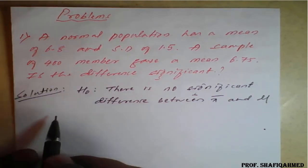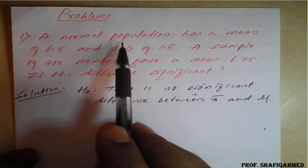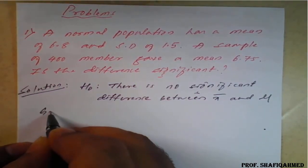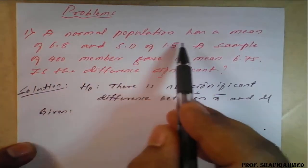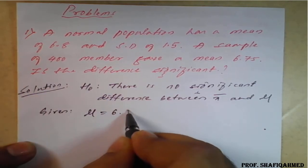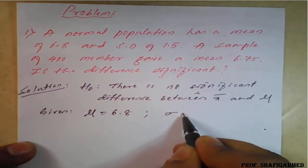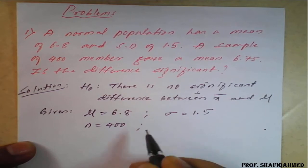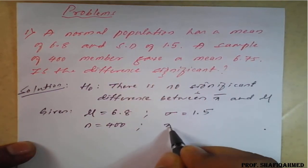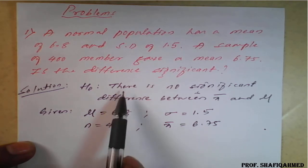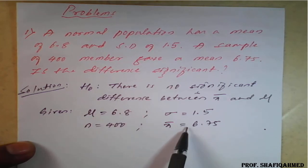We will collect the data. Given: a normal population has mean, that is population mean μ equals 6.8. Standard deviation ρ equals 1.5. A sample of 400 means n equals 400 members give a mean, that is x̄ equals 6.75. These are the data from the given question. What I have considered here is there is no difference between this μ and this x̄, this 6.8 and 6.75. We will check whether it is true or not by using the formula.